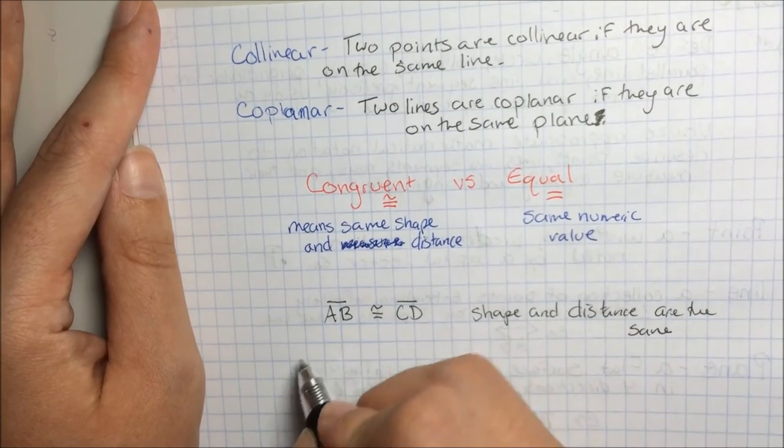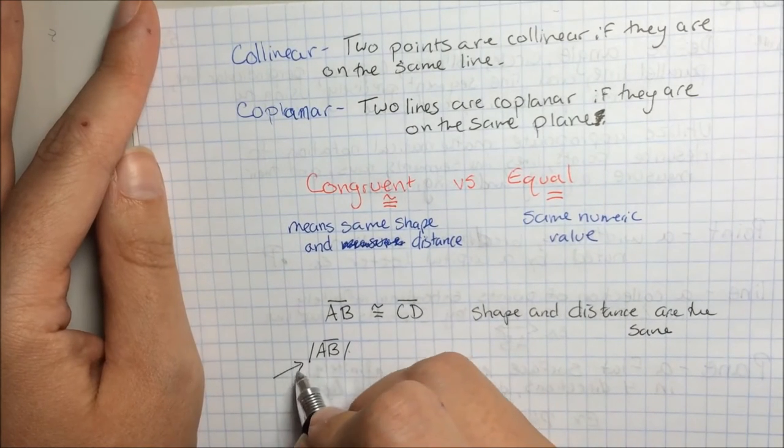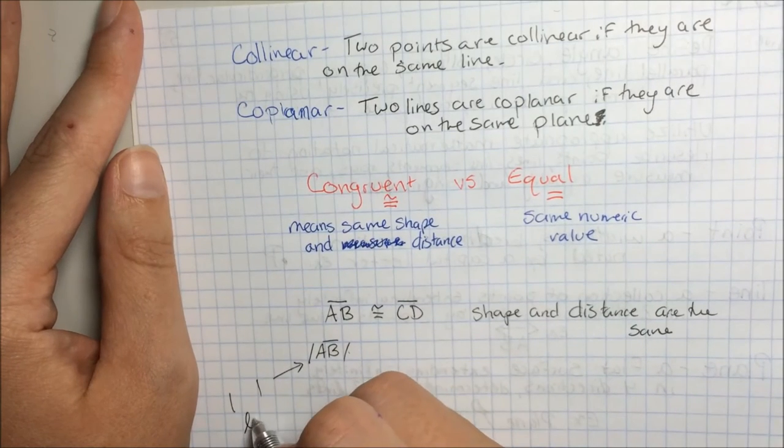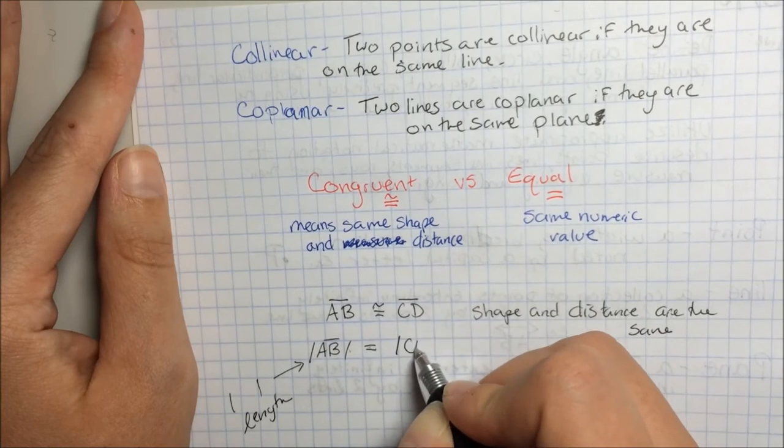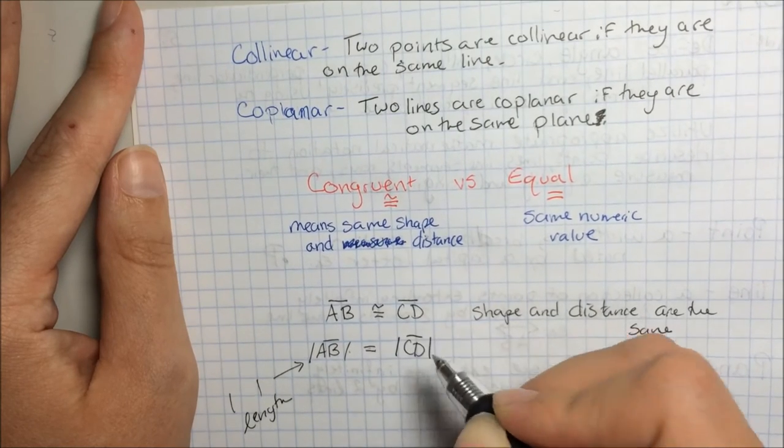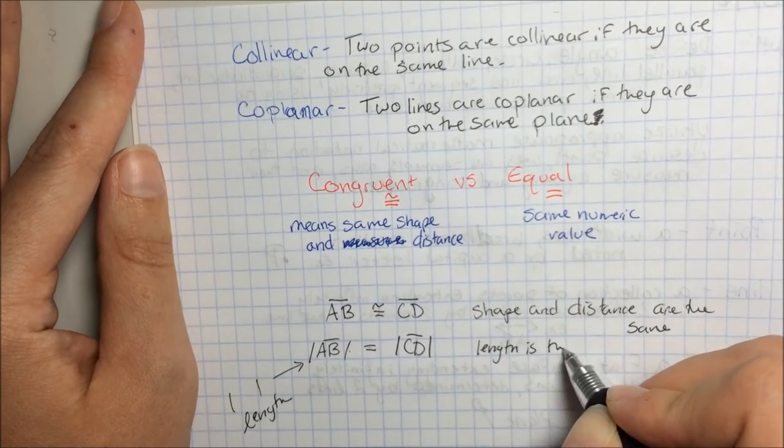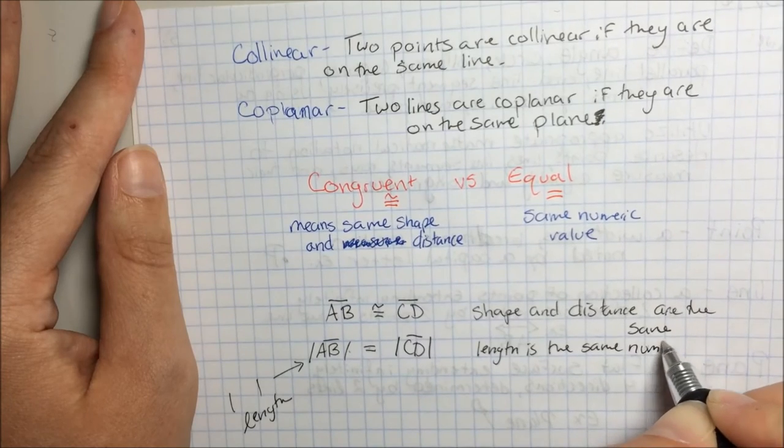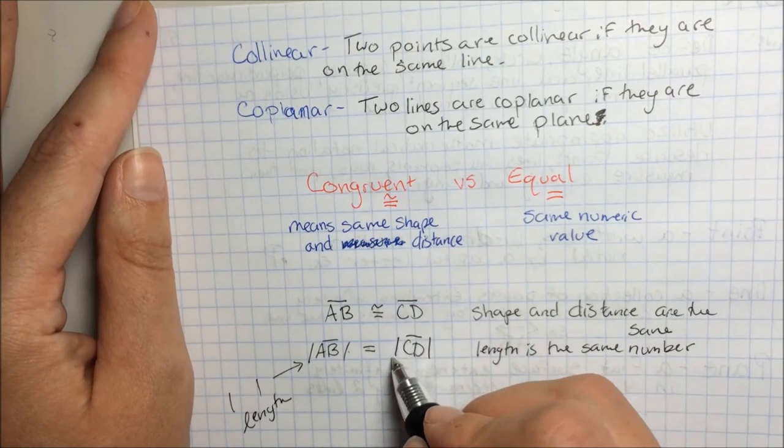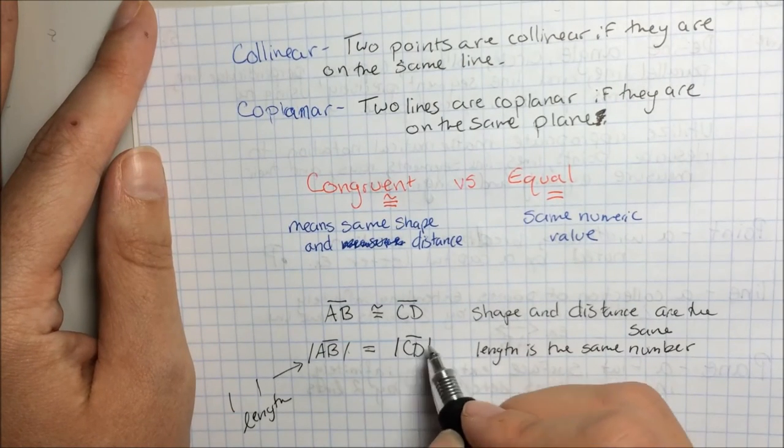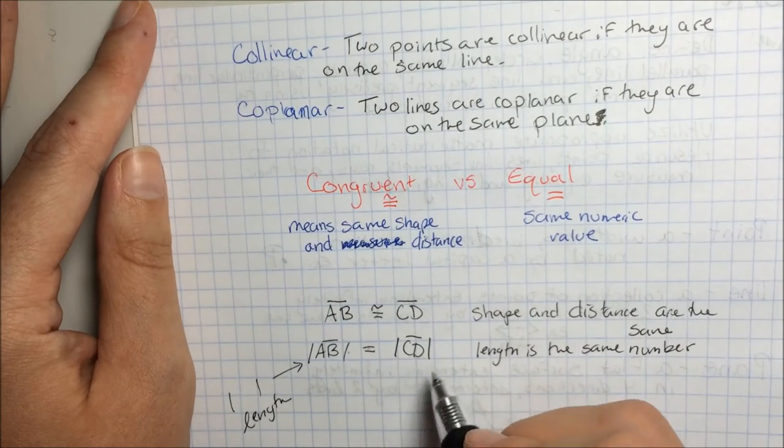So when we talk about two line segments perhaps being congruent, we're saying that the shape of these lines, shape and distance, are the same. If I were to say that AB, the length of AB, and note these two lines mean length, is equal to the length of CD, this means the length is the same number. So since here I'm talking about a shape, CD is a shape, whereas when I put these two bars on either side, that talks about a length, I use equal. So shapes use congruent, lengths use equal. Same thing with angles.